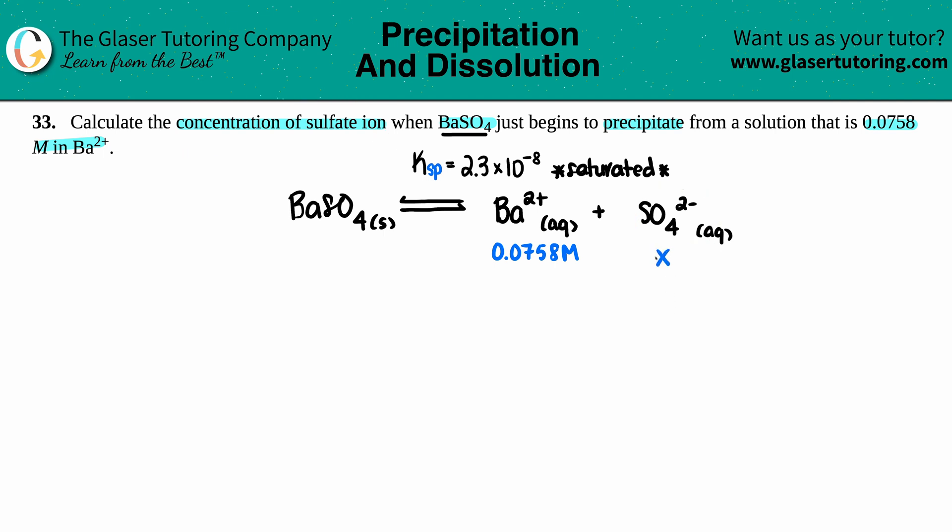Now let's make the Ksp equation. Remember, Ksp equals the concentration of the products raised to their coefficients. The general formula is Ksp equals the concentration of barium 2+ times the concentration of SO4 2-. I don't have to raise these to any numbers because there are ones in front, so you can raise them to the first but you don't have to.